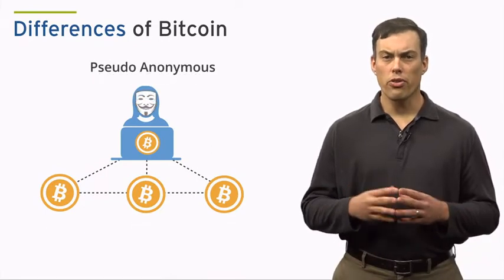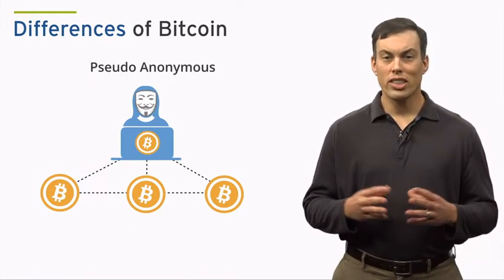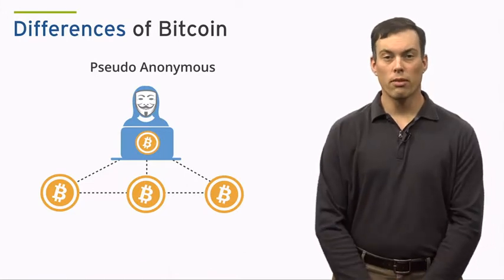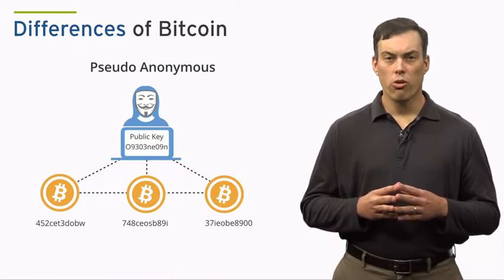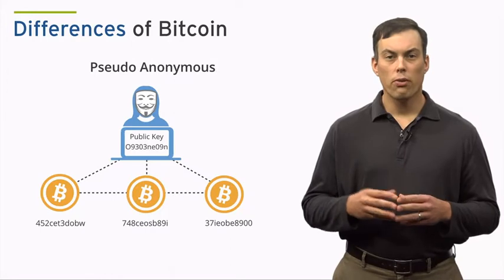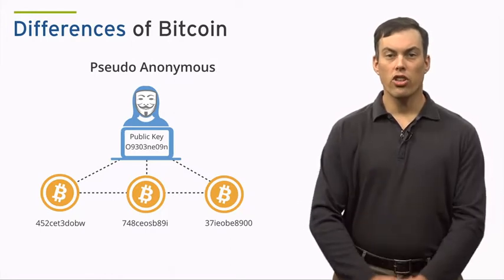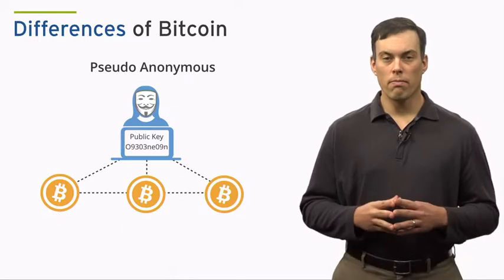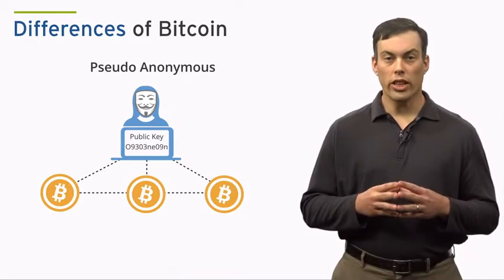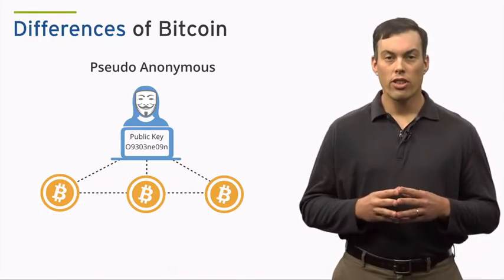Bitcoin is also pseudo-anonymous, meaning that your personal information is not identifiable on the Bitcoin network. Instead, users are only referred to by their public key or address, a long string of alphanumeric characters. Bitcoin is not fully anonymous because every transaction ever conducted by a single address is stored forever in the blockchain. If your address is ever linked to your identity, every transaction will be linked to you.